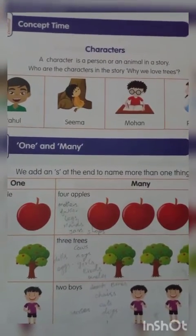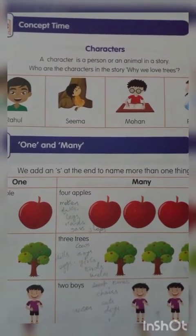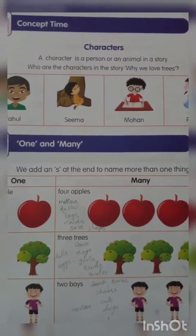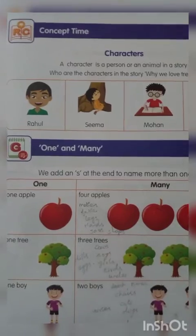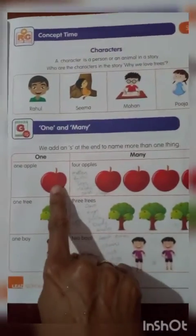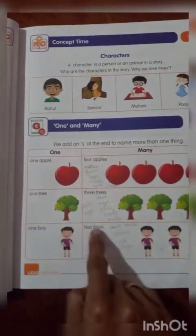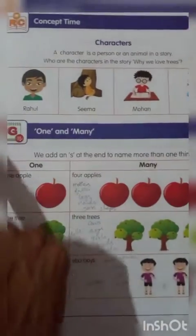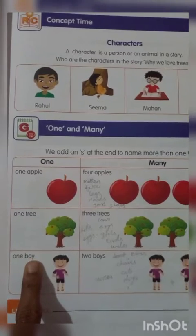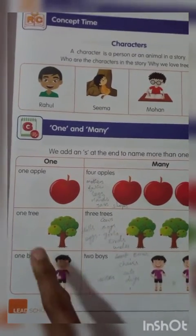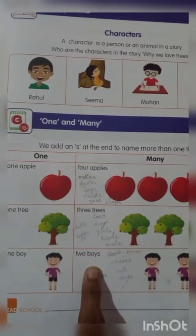Here in the book, they have given only S. So to make a plural noun, you should add S at the end of the singular noun. For example: apple, apples; tree, trees; boy, boys. If you want to change 'boy' into plural, you add S at the end.